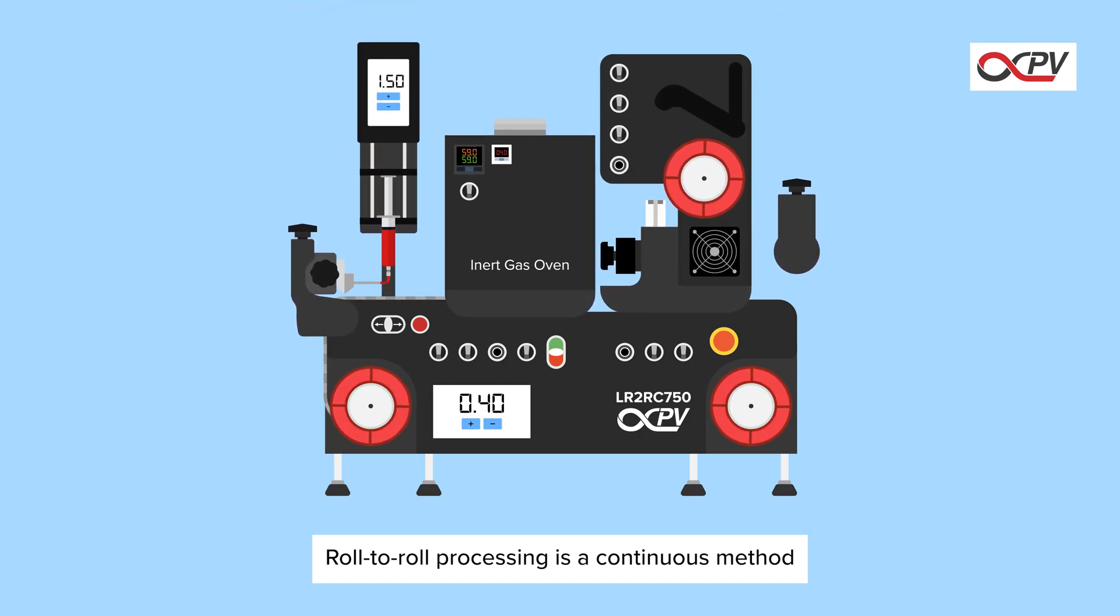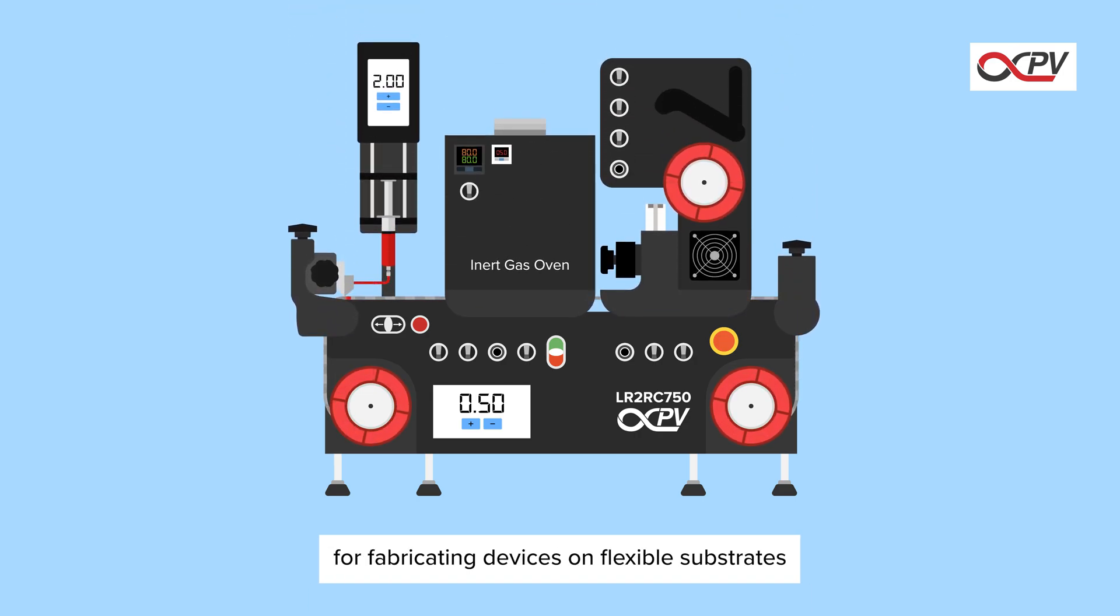Roll-to-roll processing is a continuous method for fabricating devices on flexible substrates, such as plastic or metal foils.